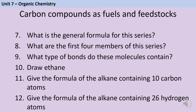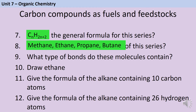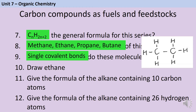Alkanes have the general formula CnH2n+2. This means that however many carbon atoms there are, there'll be twice as many hydrogen atoms and then an extra two. The first four members of the series are methane, ethane, propane and butane. These molecules all contain single covalent bonds. To draw ethane we have a chain of two carbons, and then each carbon is bonded to three hydrogen atoms. The formula of the alkane containing 10 carbon atoms will be C10H22.